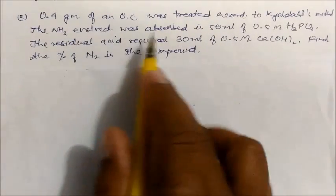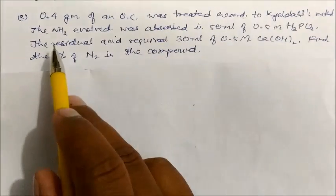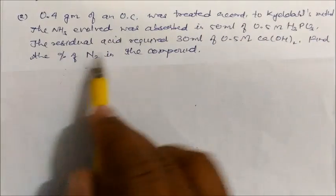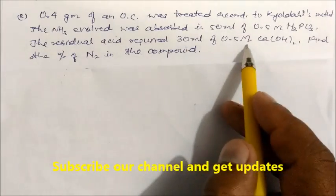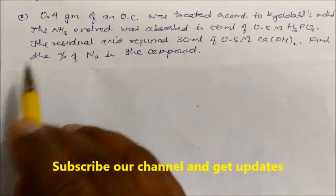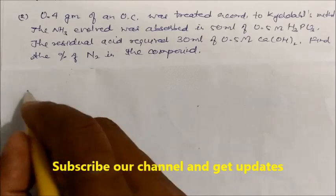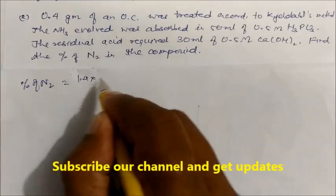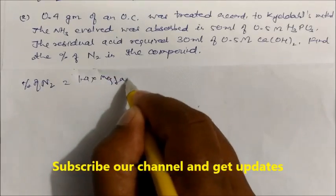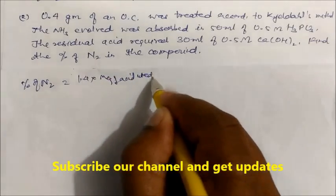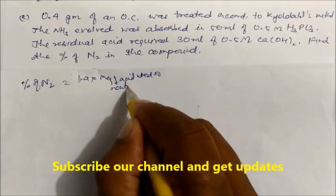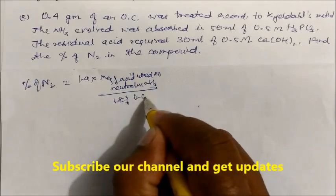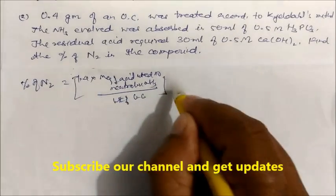Question 2: 0.4 gram of an organic compound was treated according to the Kjeldahl method. The ammonia evolved was absorbed in 50 ml of 0.5 molar H₃PO₃. The residual acid required 30 ml of 0.5 molar calcium hydroxide. Find the percentage of nitrogen in the compound. We use the same formula: percentage of nitrogen = 1.4 × milliequivalents of acid used to neutralize the ammonia, divided by weight of organic compound, multiplied by 100.